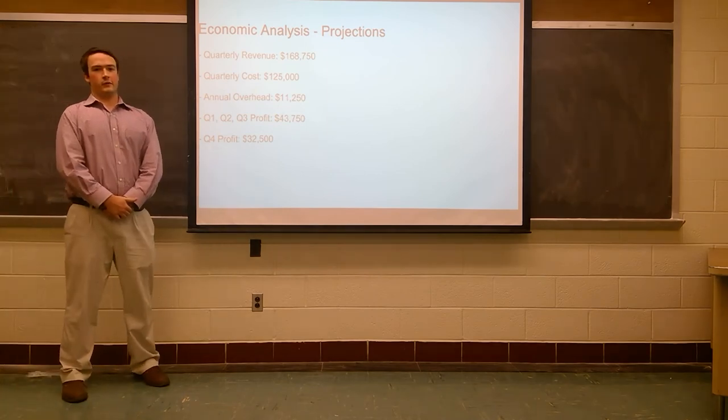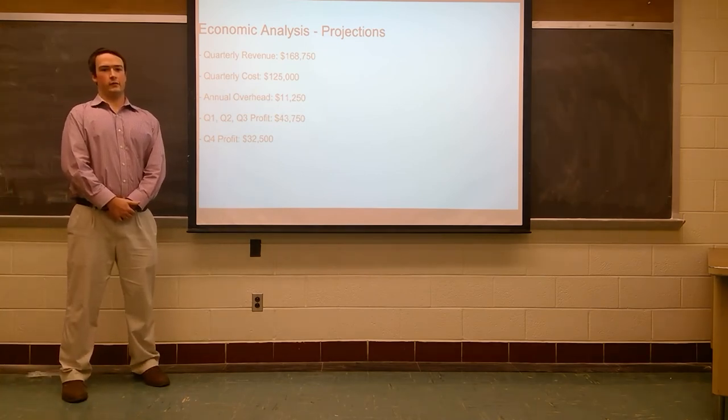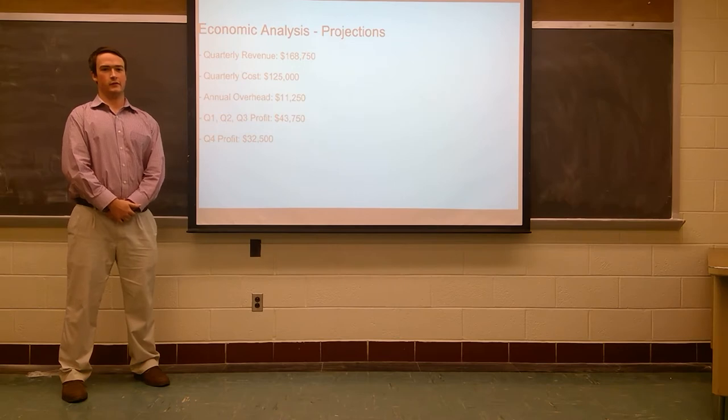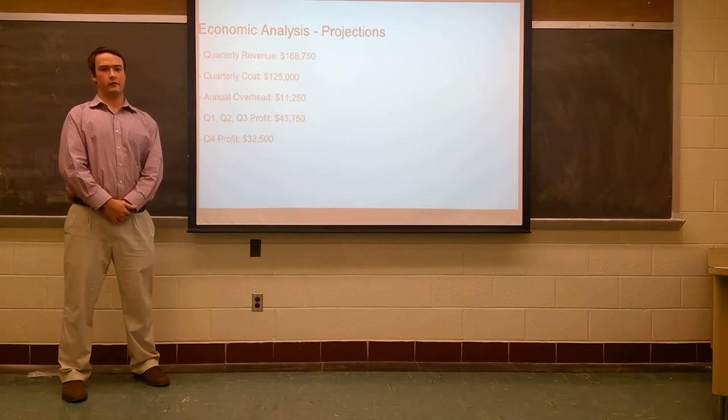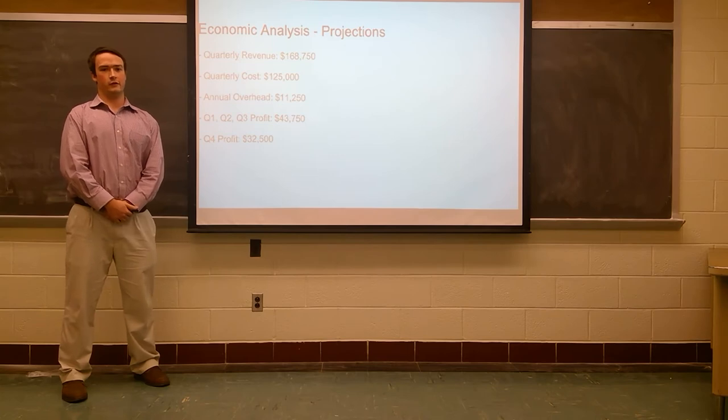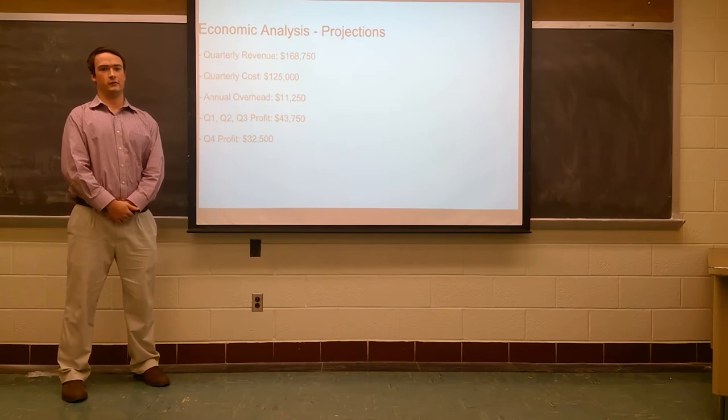As mentioned in design phase one, the team anticipates a quarterly revenue of $168,750 and a quarterly cost of $125,000 along with a fixed cost of $11,250 per year in overhead. This gives the team a profit of $43,750 for quarters one, two, and three for each year. For quarter four of each year, the team will have a profit of $32,500 due to overhead.